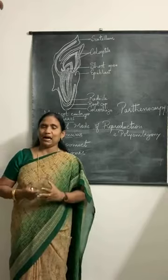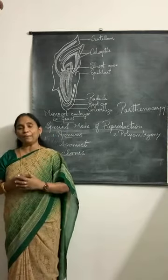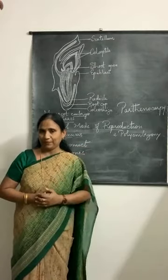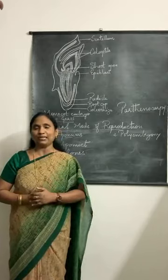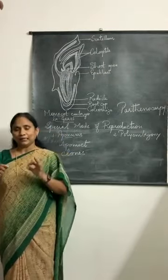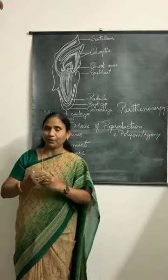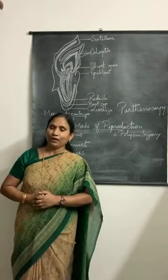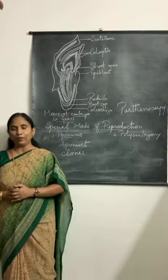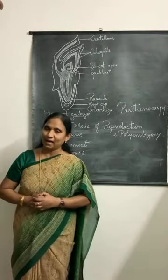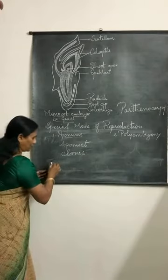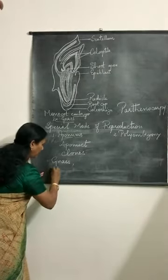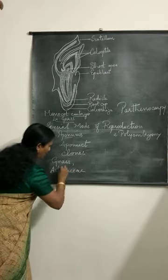Apomixis involves the development of a diploid embryo that is formed without fertilization — a diploid embryo develops into a seed without fertilization taking place. Because it is a somatic cell, reduction is not taking place. The apomixis seed results from the development of a diploid embryo without fertilization. Examples where apomixis takes place are grass and some plants belonging to the family Asteraceae.